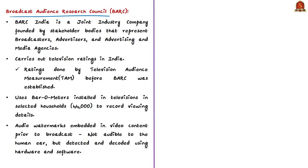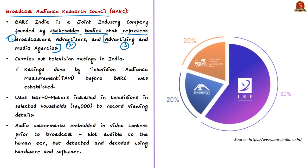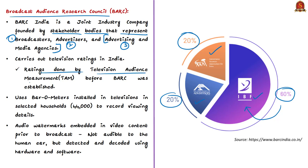BARK India is a joint industry company founded by stakeholder bodies representing broadcasters, advertisers, and advertising and media agencies. It was promoted by the Indian Broadcasting Foundation, the Indian Society of Advertisers, and the Advertising Agencies Association of India, according to the formula of 60:20:20, where 60 corresponds to the Indian Broadcasting Foundation. BARK was authorized by the Union Ministry of Information and Broadcasting in July 2015 to carry out television ratings in India, replacing Television Audience Measurement, which lost its measurement contracts after NDTV took it to court over allegations of faulty data.